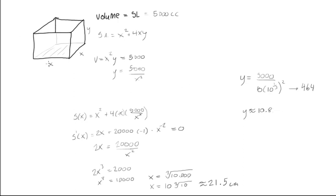So there we go. Our dimensions for this box to have the minimum amount of surface area for this given volume, the bottom dimensions, both x values, are going to be equal to about 21.5, and the y, the height of the box here, is going to be equal to about 10.8 centimeters.